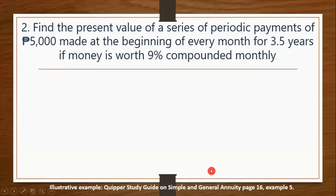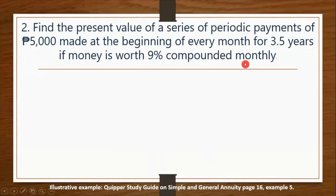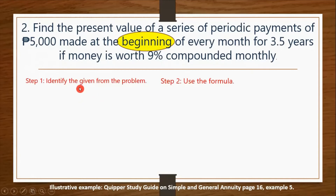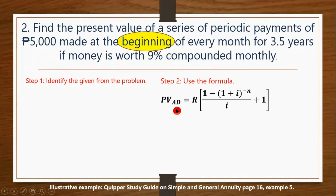For the second example: find the present value of a series of periodic payments of P5,000 made at the beginning of every month for 3.5 years if money is worth 9% compounded monthly. This is a simple annuity since the periodic payment interval of every month coincides with the compounding period. It is classified as annuity due since the keyword 'beginning' is used.